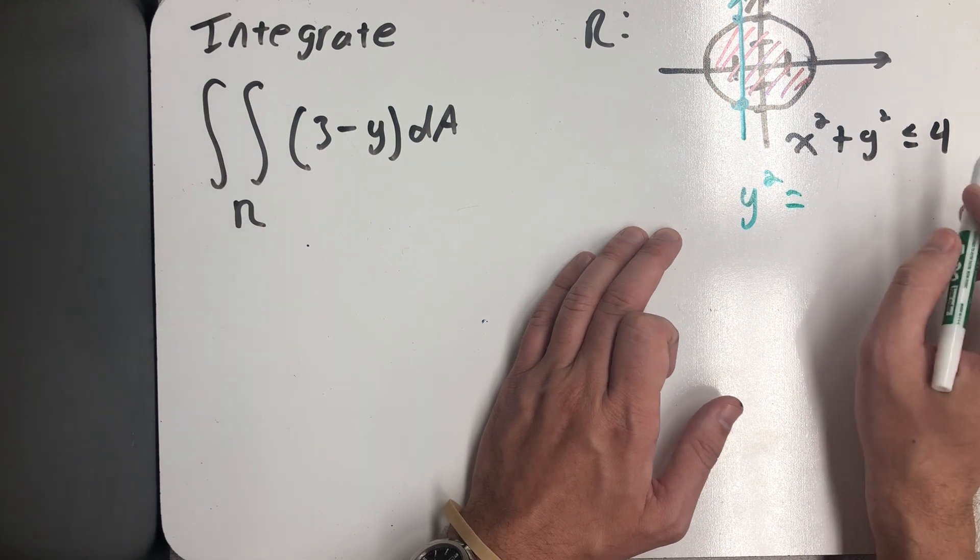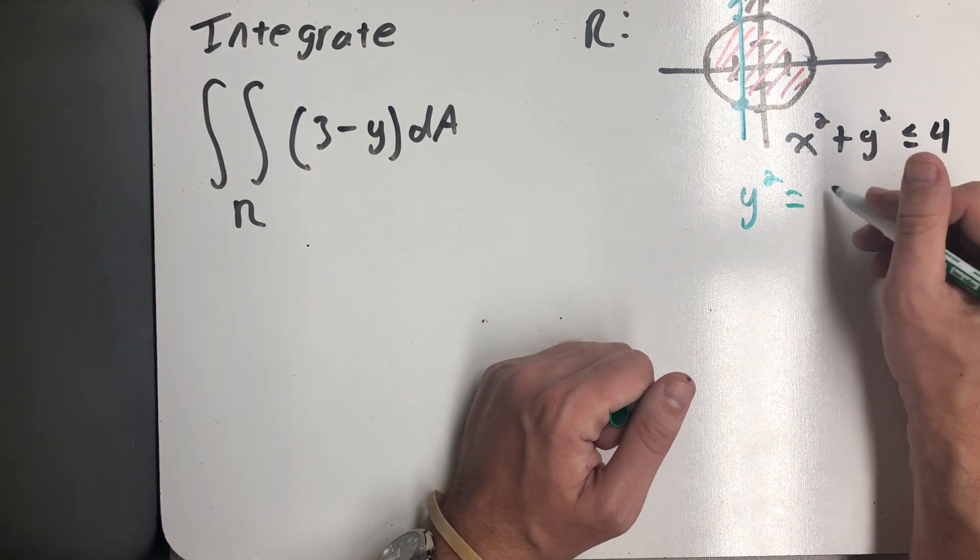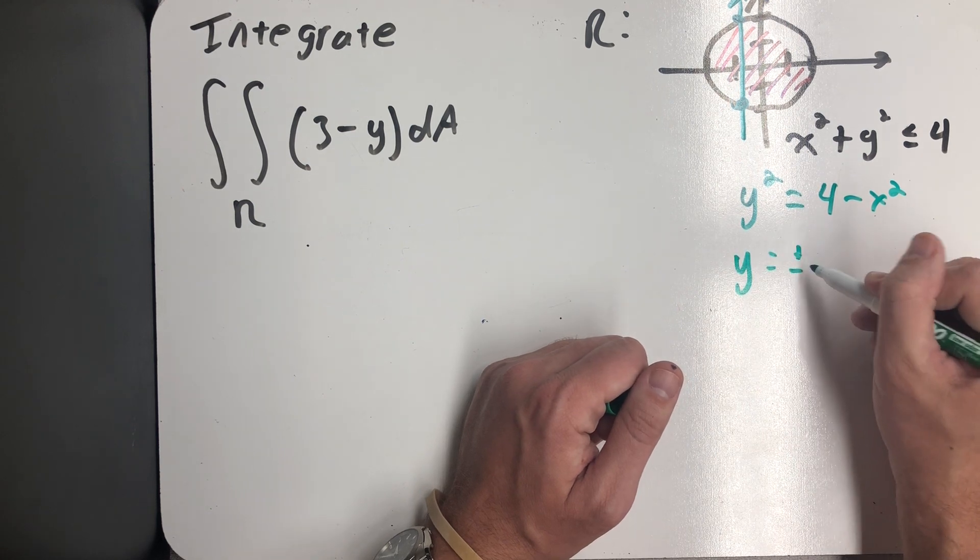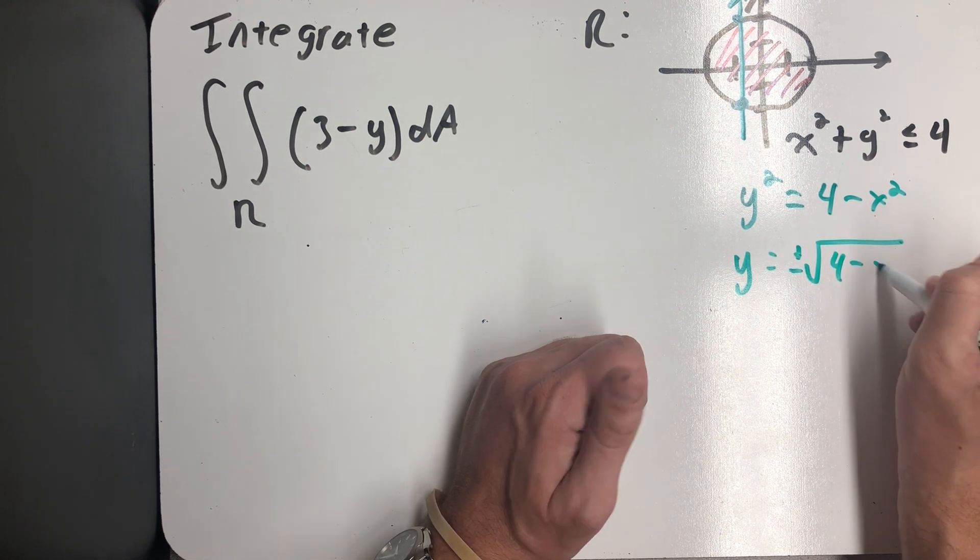If I imagine this as an equation rather than an inequality, I can take x squared away from both sides, take a square root, and I get the top half and bottom half of a circle.